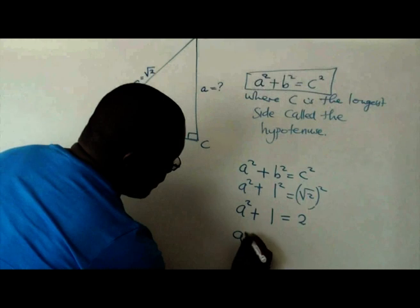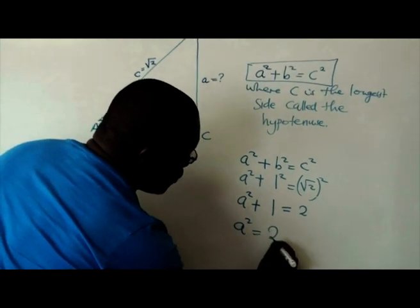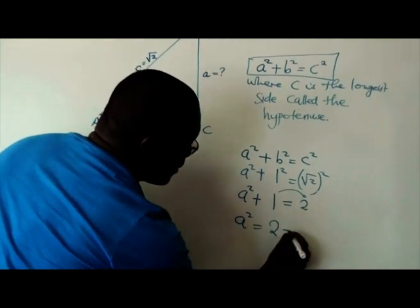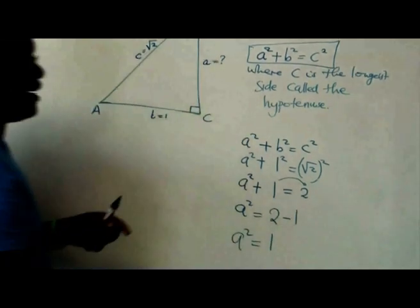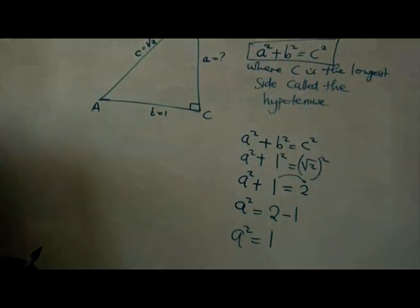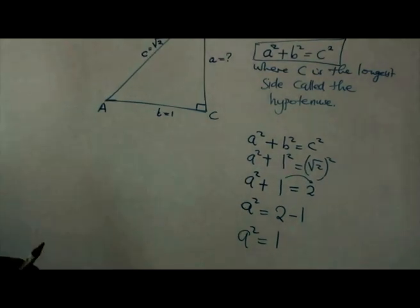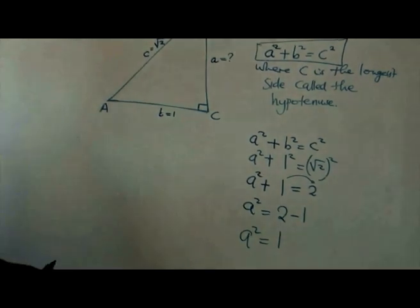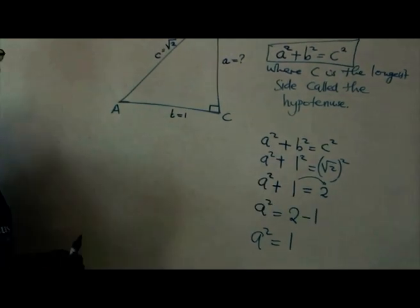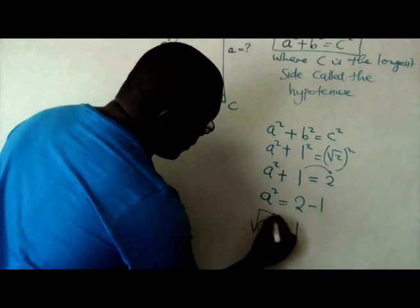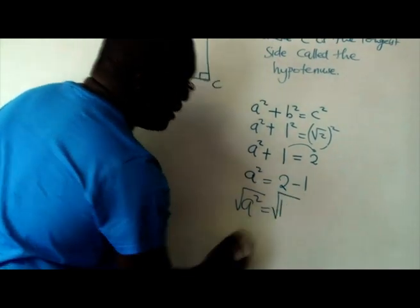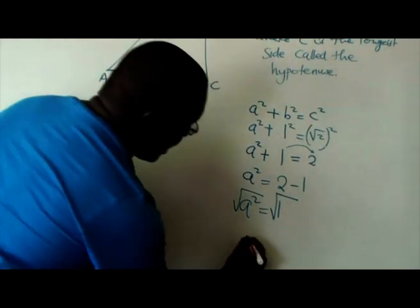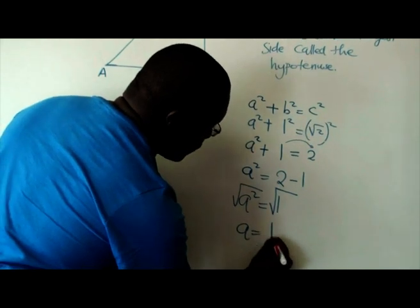So a² is equal to 2. And then if I take the 1 to that side, it's going to be minus 1. So a² is equal to 1. So now, because we've got a², we're not looking for a², we're looking for a. We have to reverse that using the square root. So square root, once you do on the left-hand side of the equation, you also do on the right-hand side. So a is equal to 1.